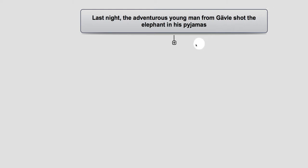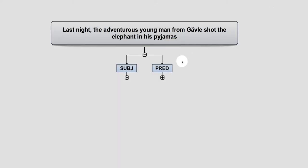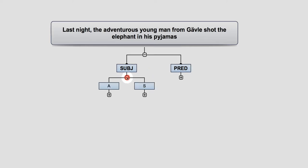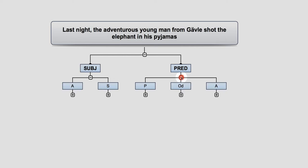Looking at this, we first divide the subject and the predicate. In the subject we have an adverbial 'last night' and the subject 'the adventurous young man from Gävle'. In the predicate, everything from 'shot', we have the predicator, the elephant, and now there are two positions for the adverbial, which gives the sentence its ambiguity.